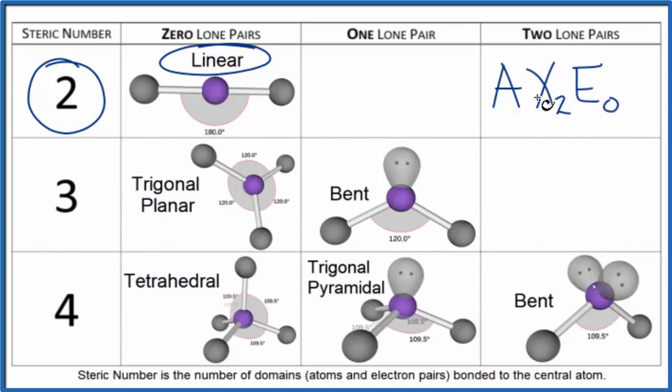Then you either memorize that AX2 is linear, or you look it up on a table. This is Dr. B with the molecular geometry, electron geometry, and bond angles for BeCl2, beryllium chloride.